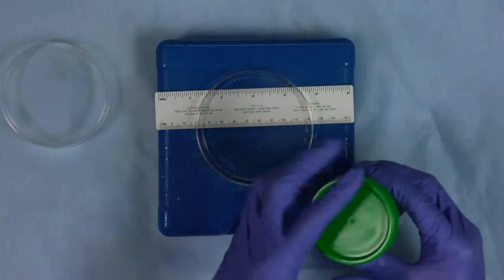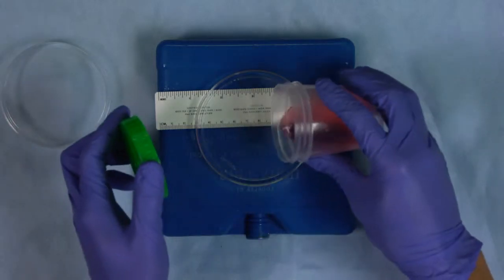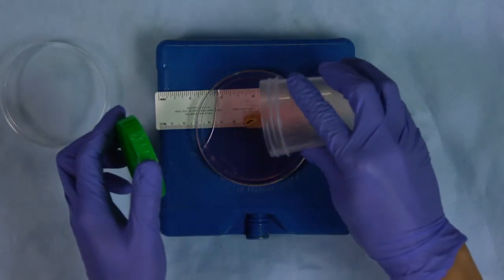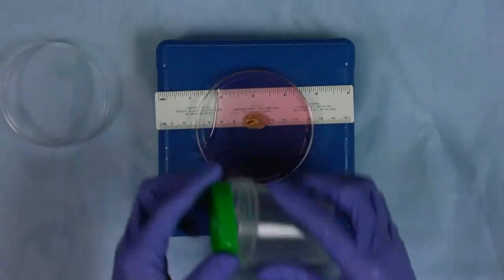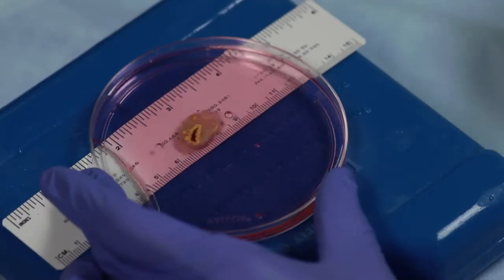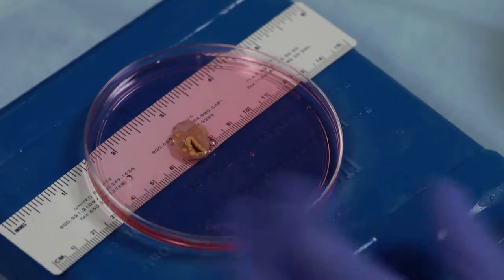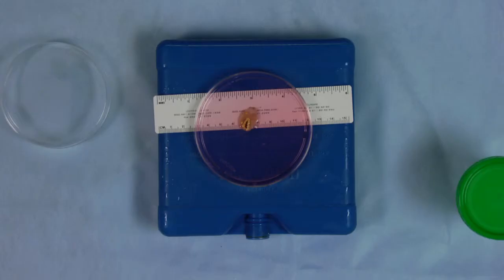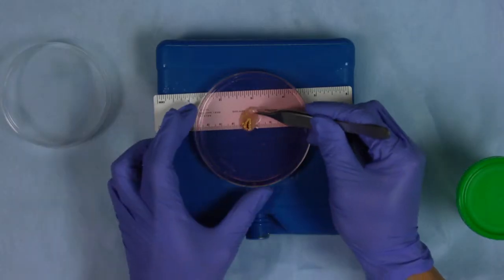The tissue will come from the operating room in the holding media as specified in the protocol. Tip the ovary out into a 100 millimeter petri dish on ice. Depending on your site, a portion of tissue may have already been removed for pathology. If still necessary, remove the specified portion now.